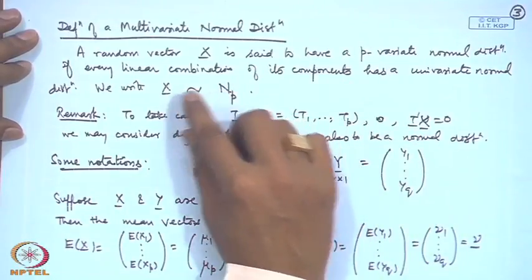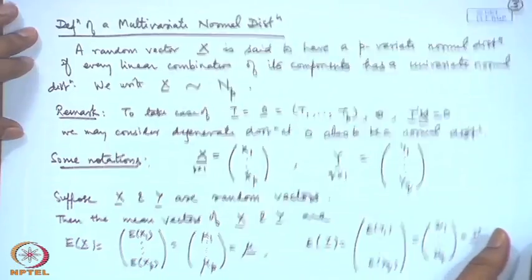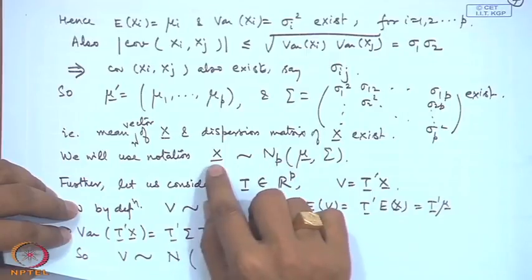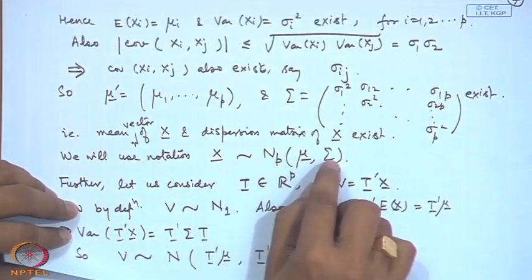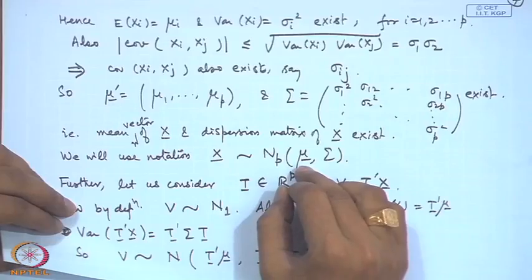As a consequence of this definition, we proved certain properties. For example, we showed that if x has a multivariate normal distribution then its mean vector and variance-covariance matrix will exist. We showed that the mean vector mu and the variance-covariance matrix sigma exist, and modified our notation to x following Np(mu, sigma).